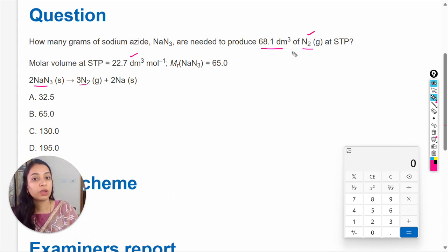Since this volume is given, to find the actual number of moles of N2 gas produced, we will use the formula: number of moles equals